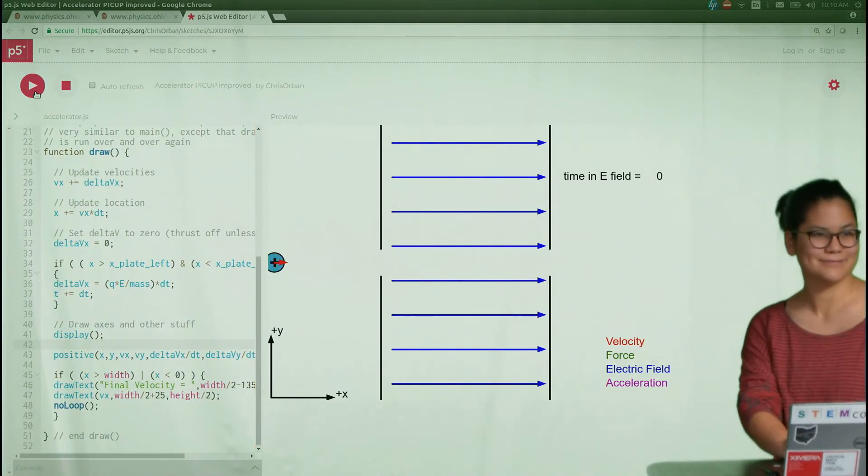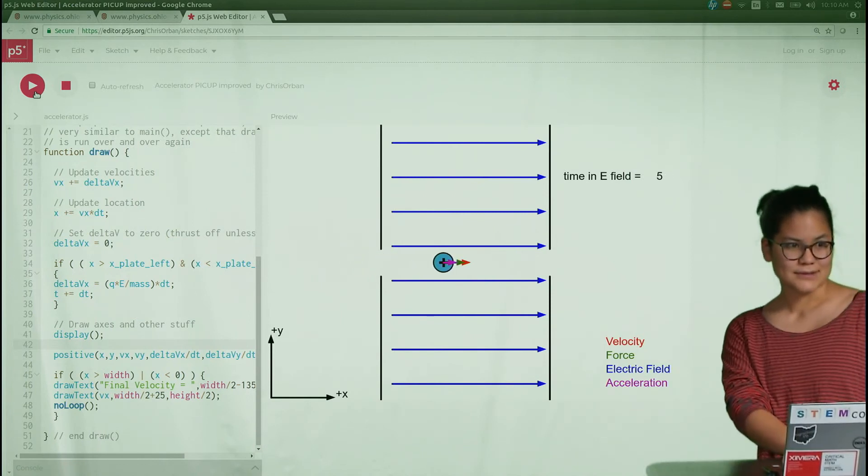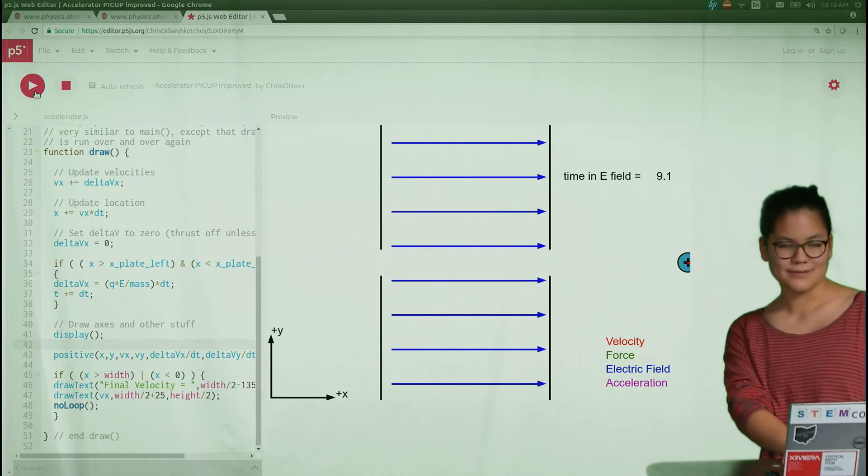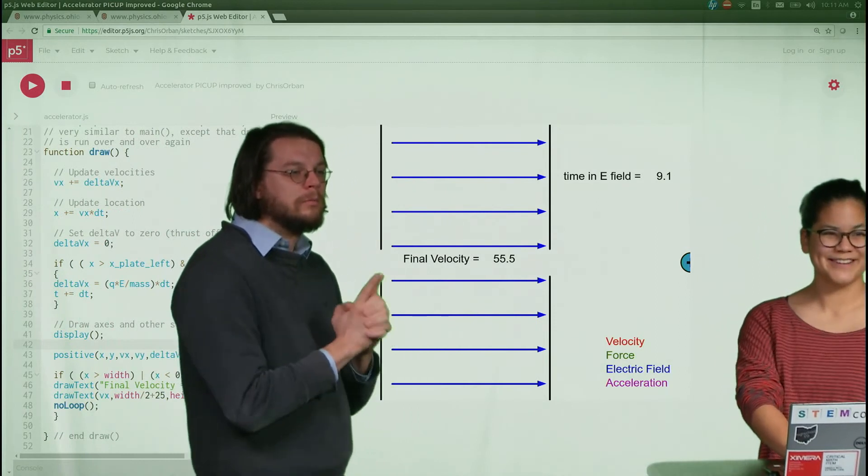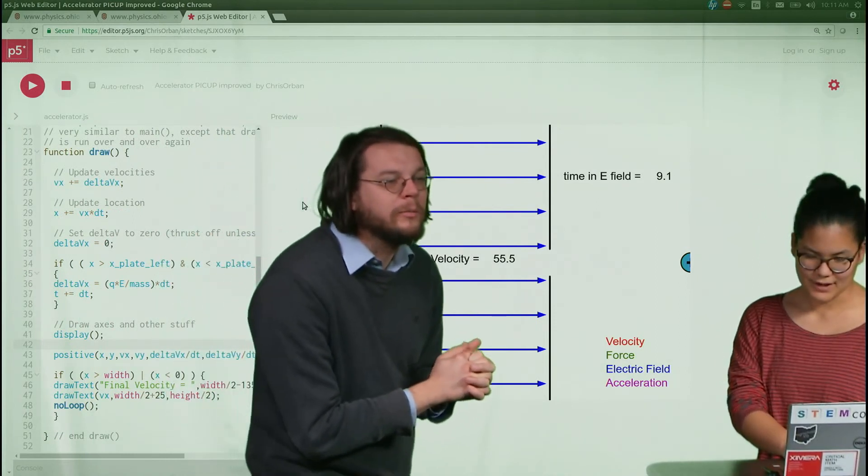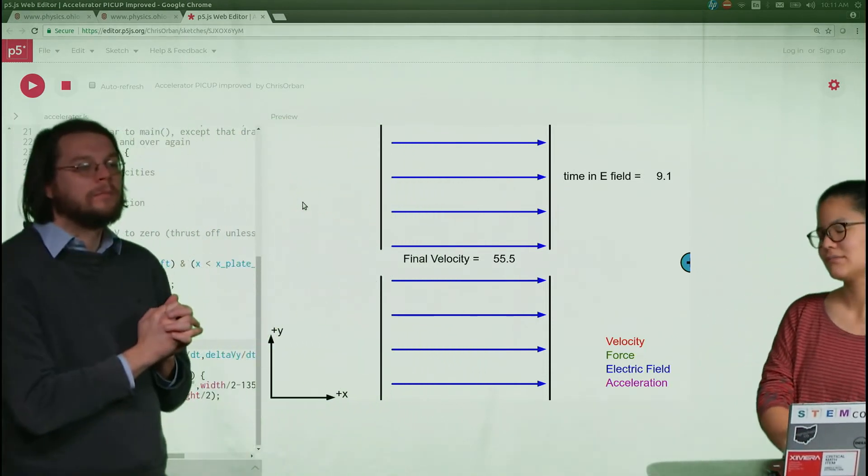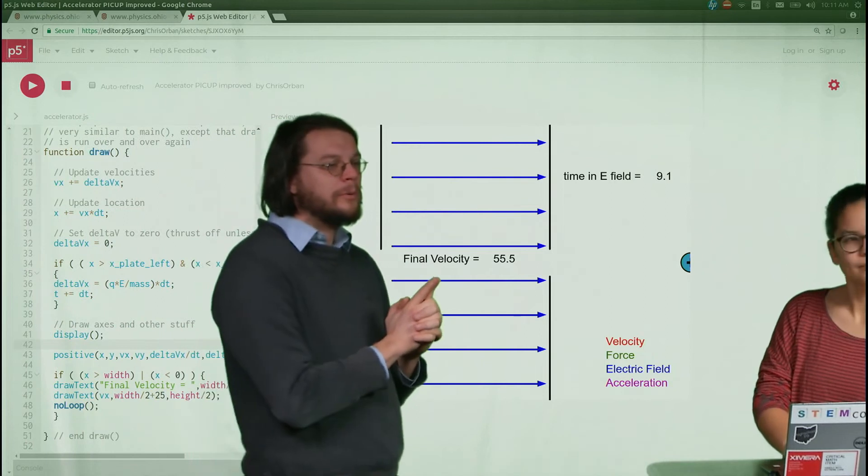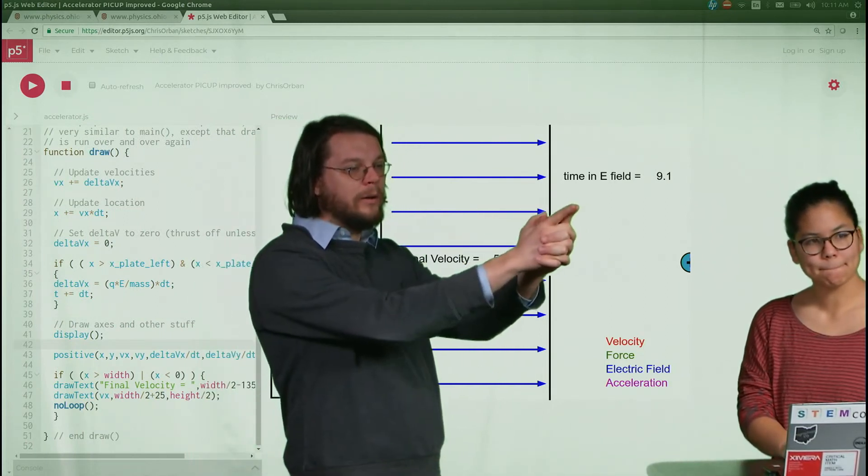Go ahead, come in, get accelerated. Go ahead and click the screen, I think that sometimes helps. Final velocity is 55.5. How much time did it spend in the field? 9.1. So what we want to try to do is we want to try to figure out if we can explain this number with that number and all the stuff at the beginning of the program.